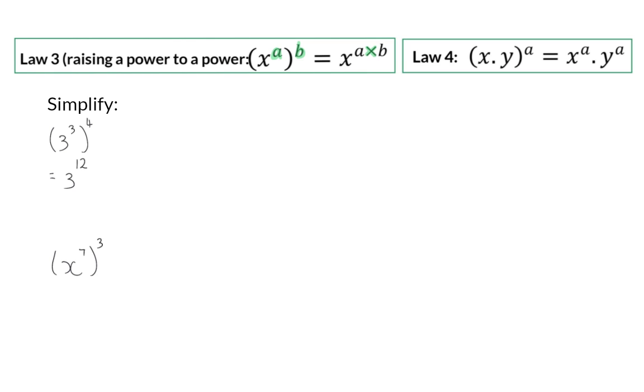The same applies for variables, so here we will have x to the power of 7 times 3, and that is 21.